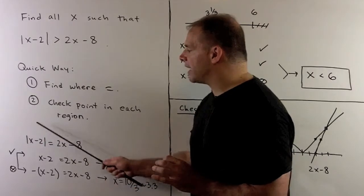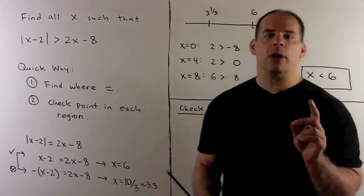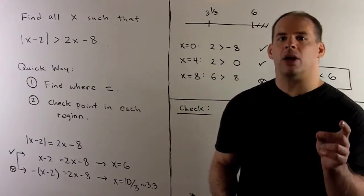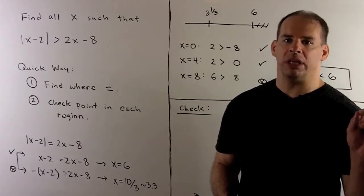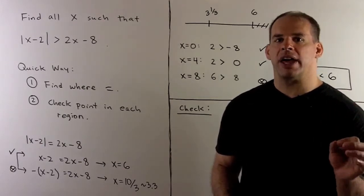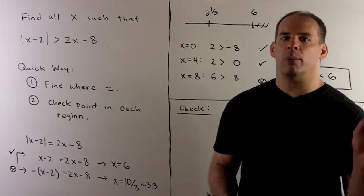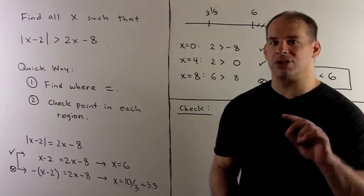We're kind of glossing over the definition a little bit. We know in one case, when x minus 2 is positive, we leave it alone. In the other case, when x minus 2 is negative, we multiply by minus 1, which takes off the minus sign.